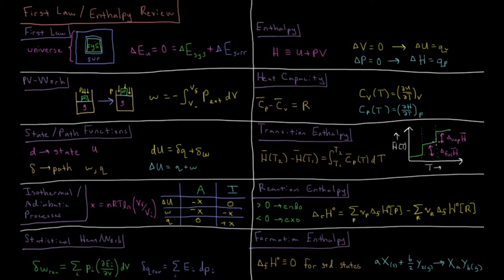Similarly going from liquid to gas, you have the enthalpy of vaporization. In between these transitions, the change in enthalpy, so the molar enthalpy at some given temperature 2 minus enthalpy at given temperature 1, the change in enthalpy between two temperatures is the integral from those two temperatures of their constant pressure heat capacity integrated with respect to temperature.